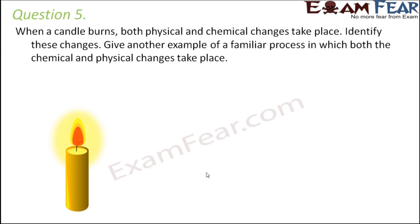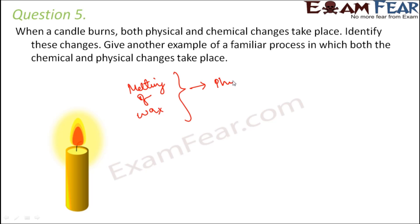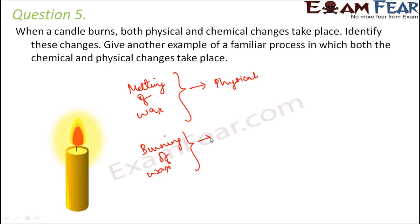Question number five: when a candle burns, both physical and chemical changes take place — identify these changes. When a candle burns, the wax starts melting. During melting, the solid wax is converted into liquid form, but the composition stays the same — so melting of wax is a physical change. At the same time, some part of the wax is also burning, getting converted into new chemical substances; heat and light are released — which indicates a chemical change.